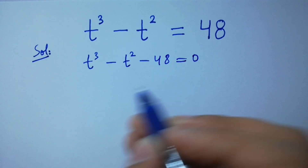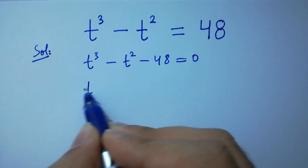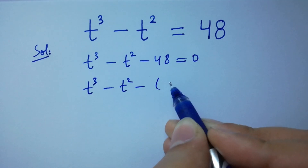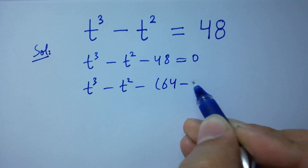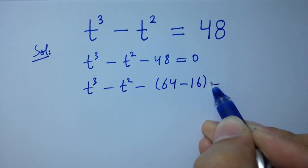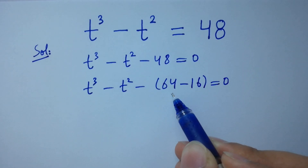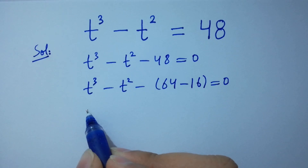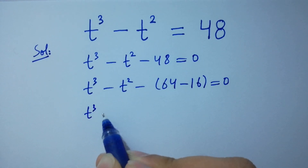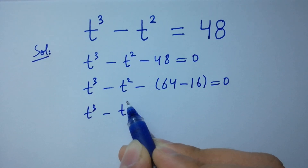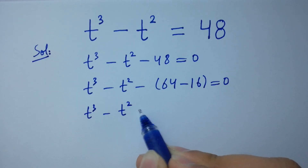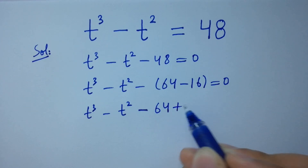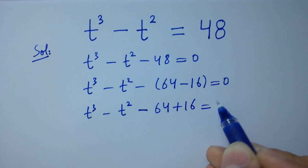This is the same as t cubed minus t squared minus 64 plus 16 equals zero, since 64 minus 16 is 48. Simplifying: t cubed minus t squared minus 64 plus 16 equals zero.